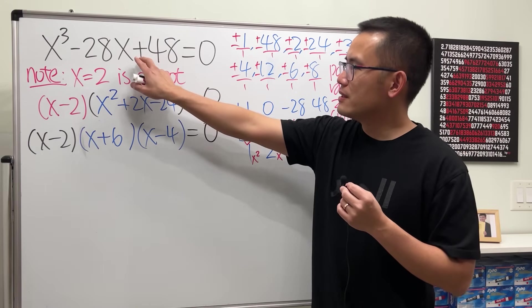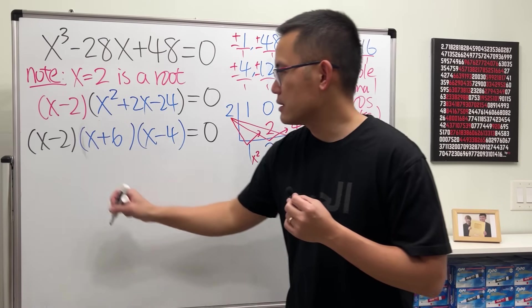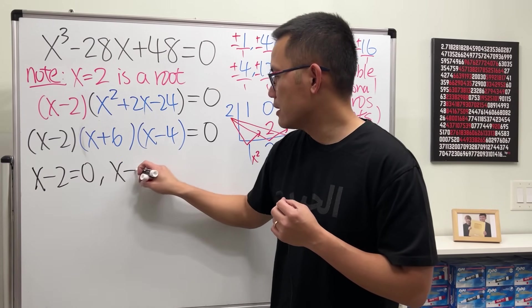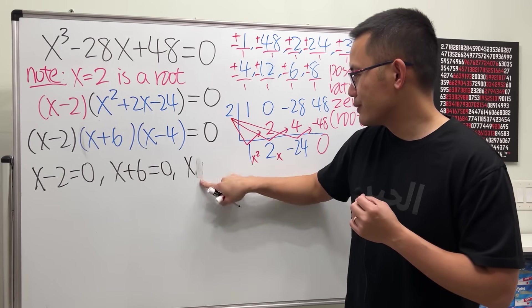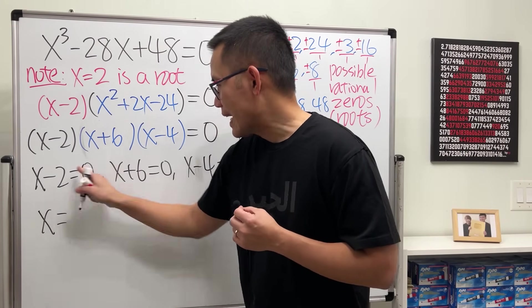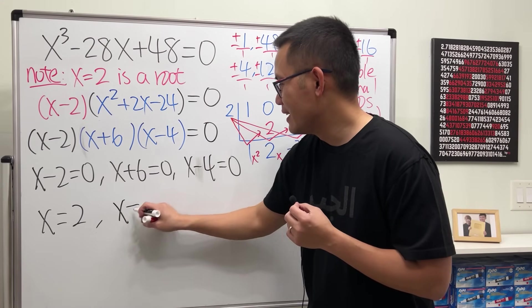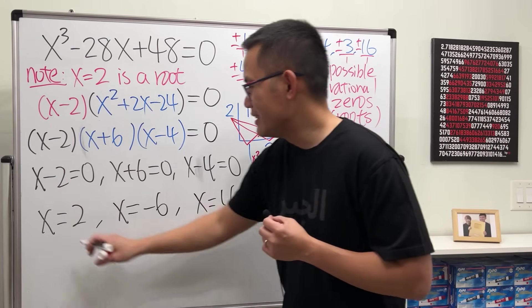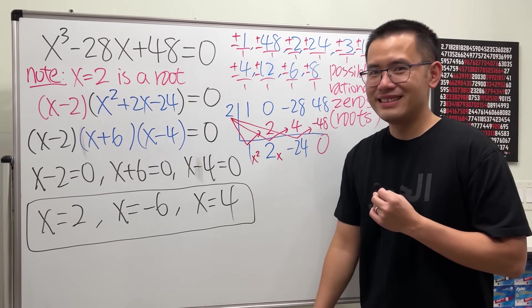We just factored this cubic equation into a product of three linear factors. So this means put the first factor equal to zero, put the second factor equal to zero, and then the third factor equal to zero. Therefore we get x equals 2 for the first answer, and then subtract 6 to both sides, and then add 4 to both sides. And ladies and gentlemen, very nice. That's it.